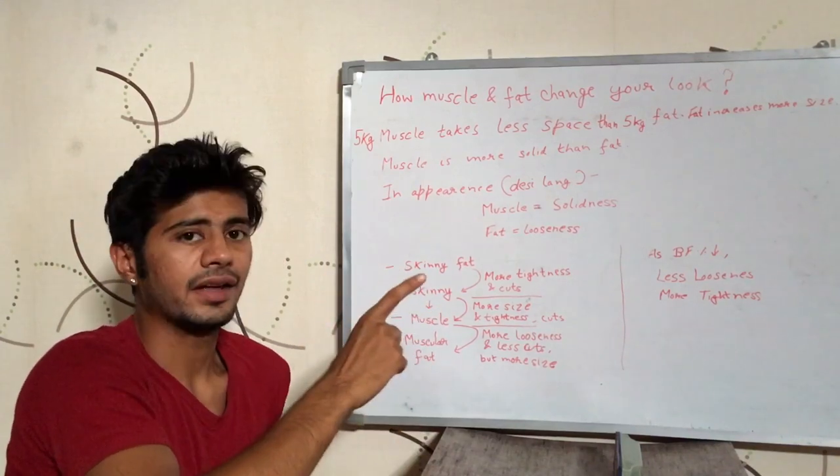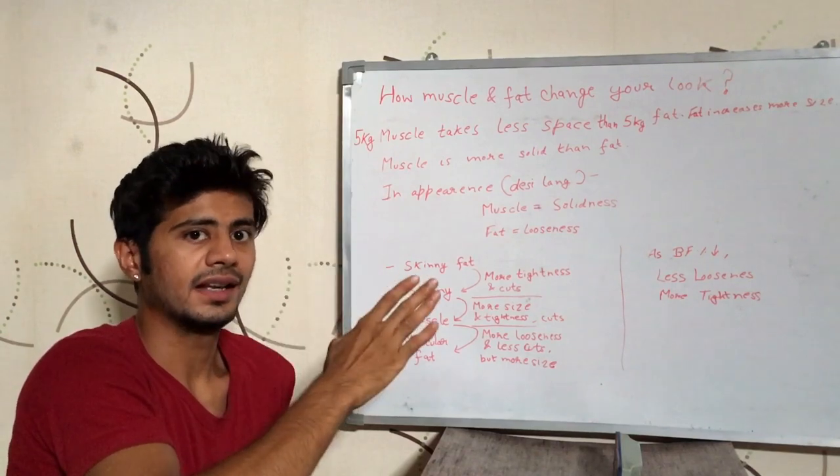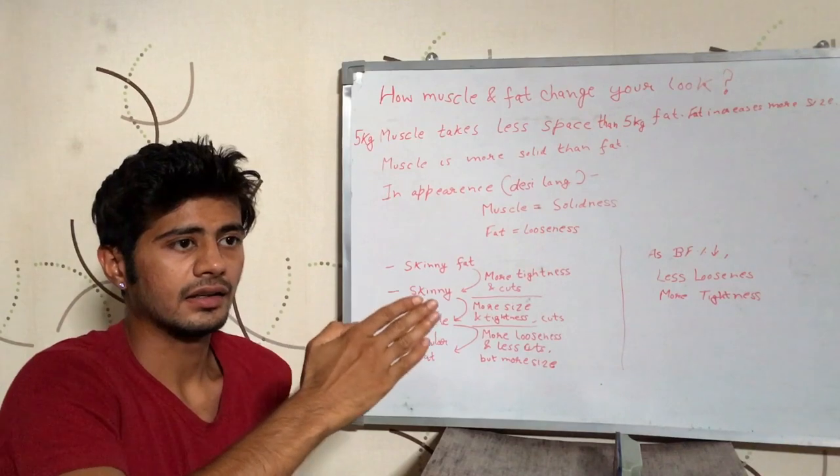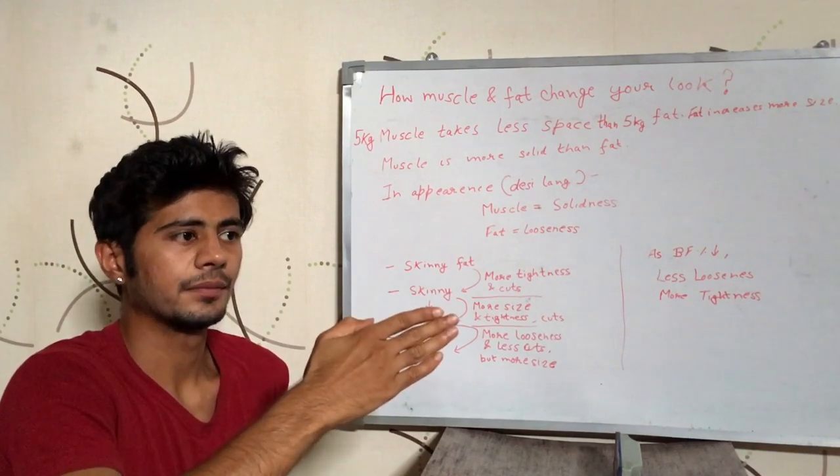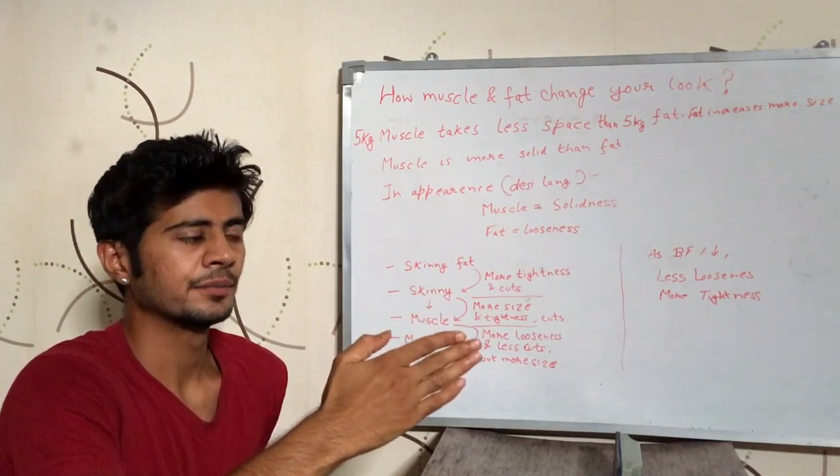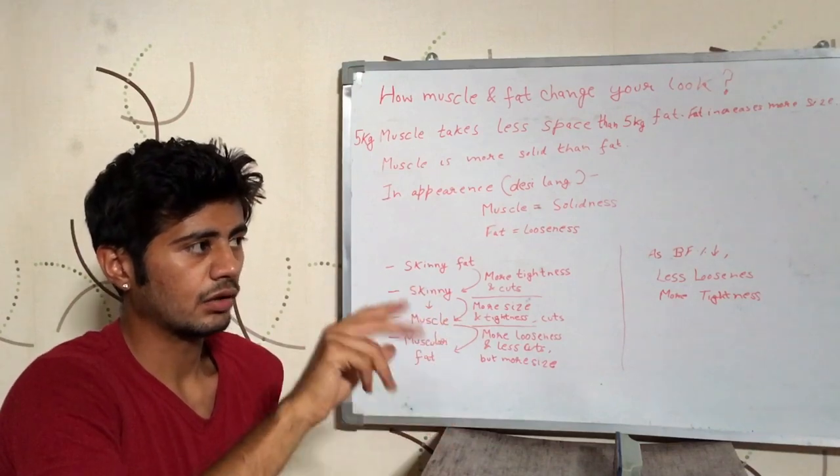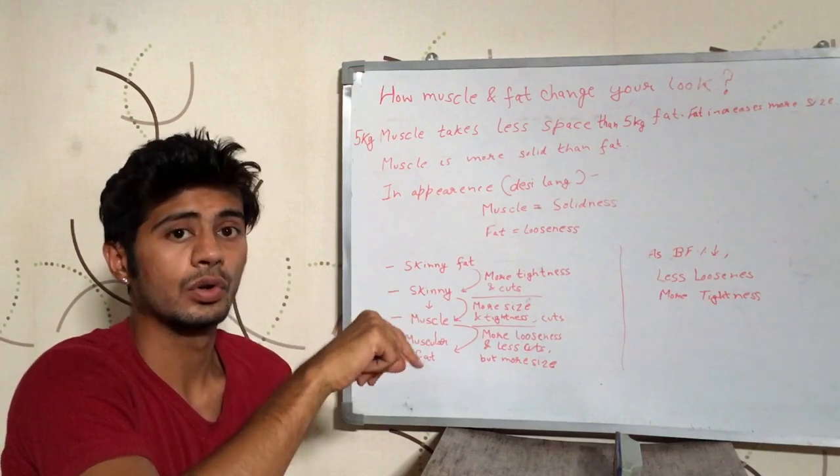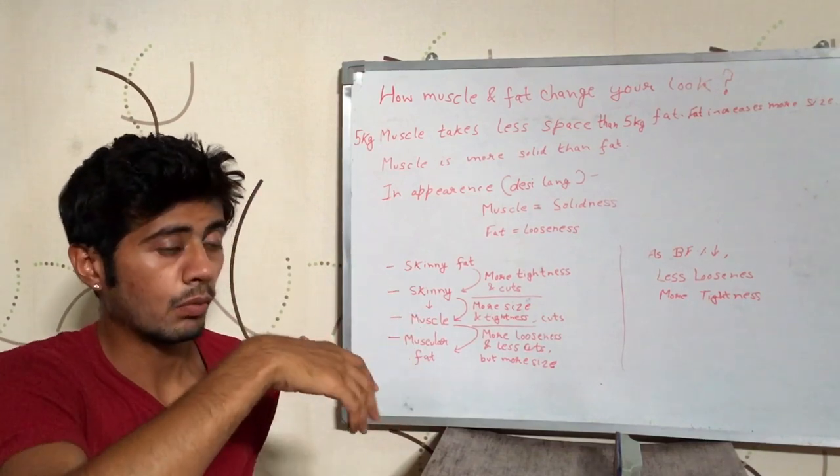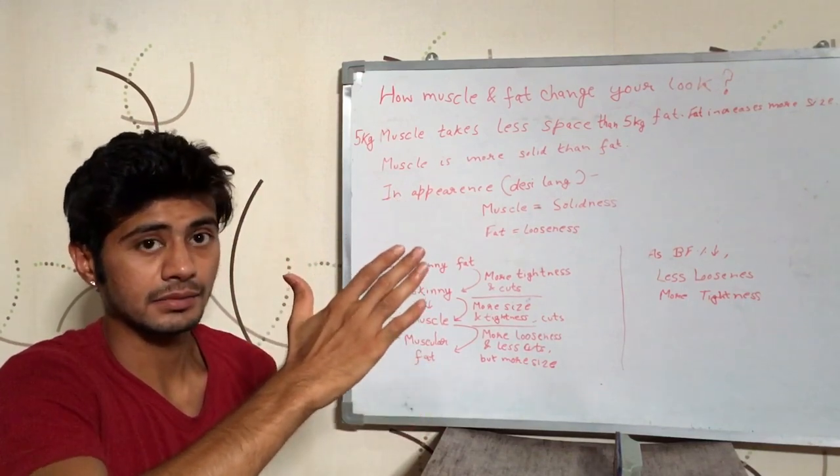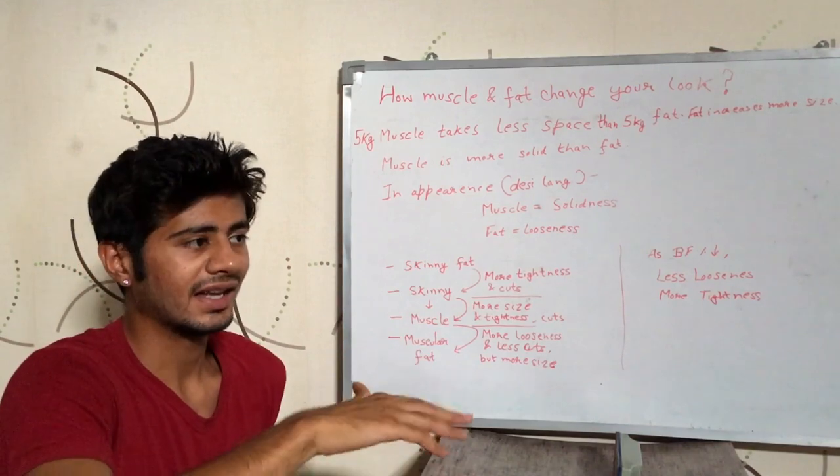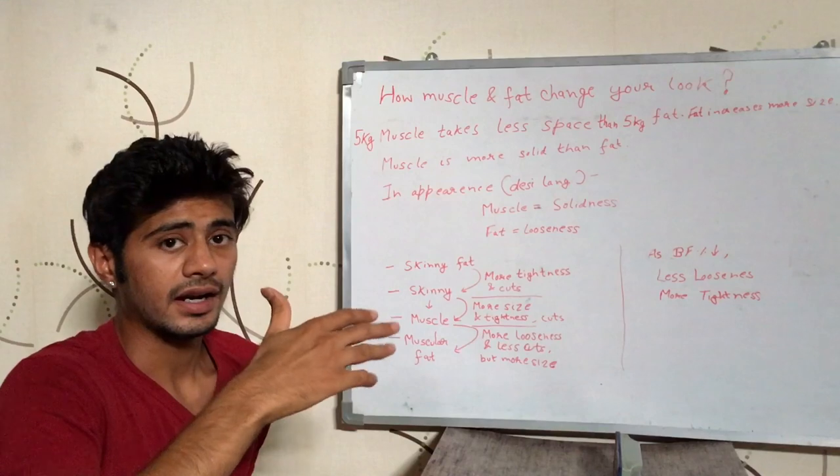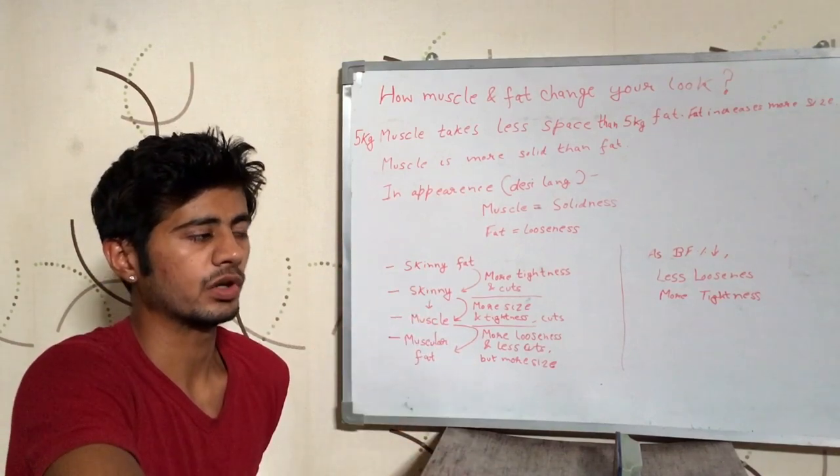So if you compare the guy with less muscle but very less fat and a guy with more muscle and a lot of fat, in appearance, a lot of people would say that the guy who has less muscle but very less fat looks good. Because he looks more tight and he has more visible cuts as compared to the guy who looks loose even with a lot of muscle and he does not have visible cuts in his body.